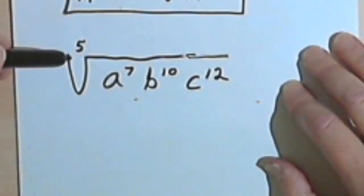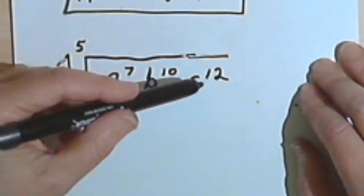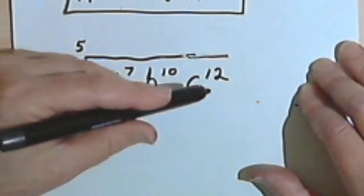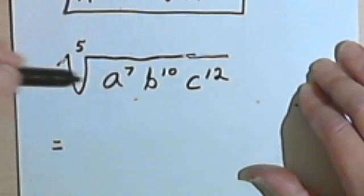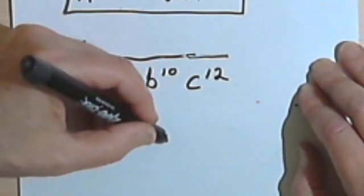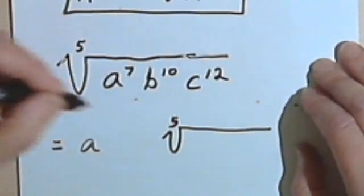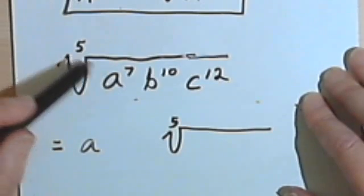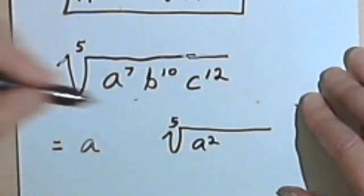Here's a fifth root. We have the fifth root of a to the 7th, b to the 10th, c to the 12th. Once again, we're going to deal with each of the variables separately. So 5 goes into the 7 one time, so I'm going to have an a outside of my radical sign. Under the radical sign, I'm going to take the 2 remainder that I had when I divided 5 into 7. So that's going to give me a squared.